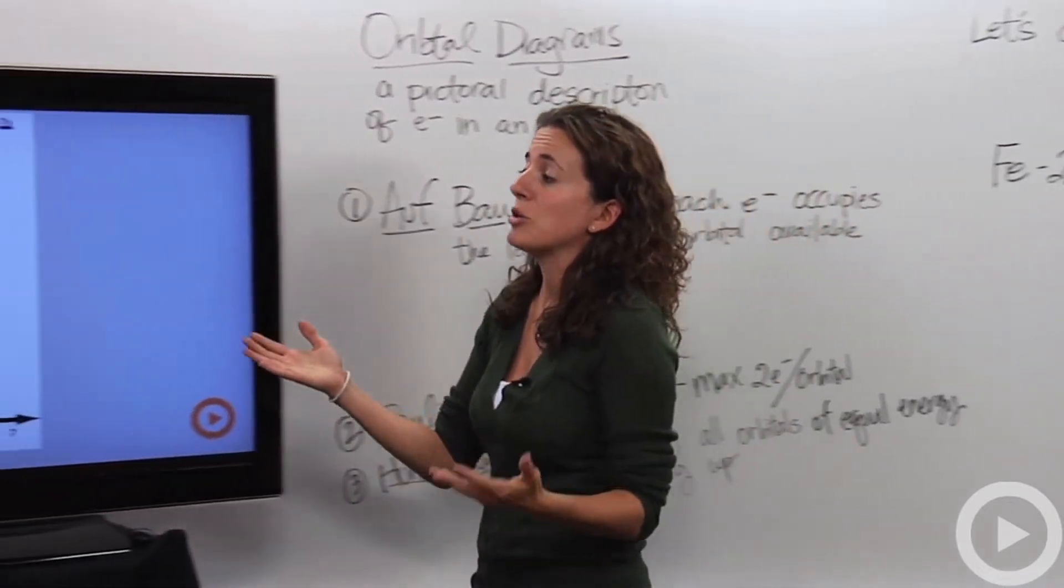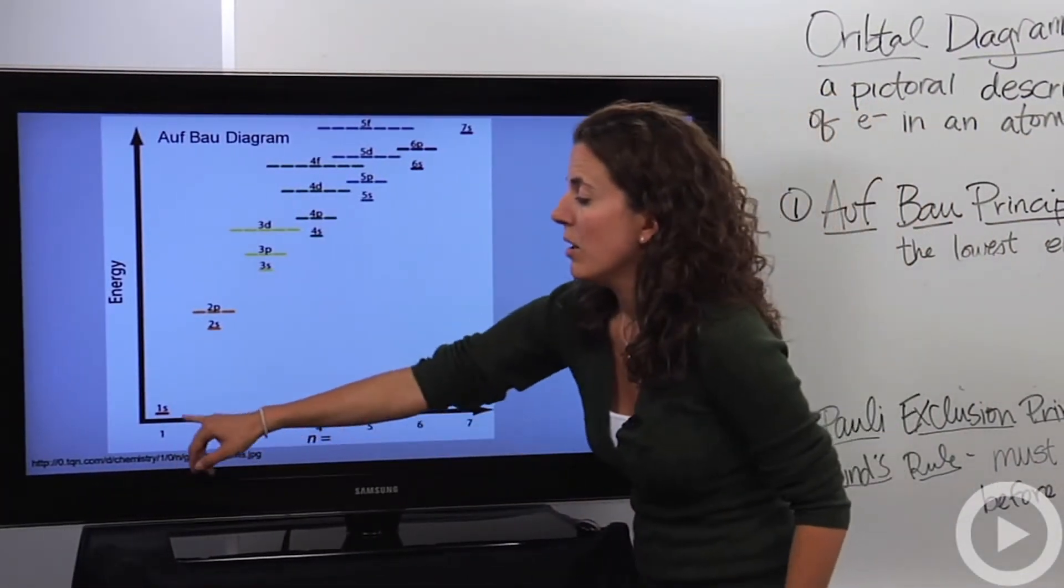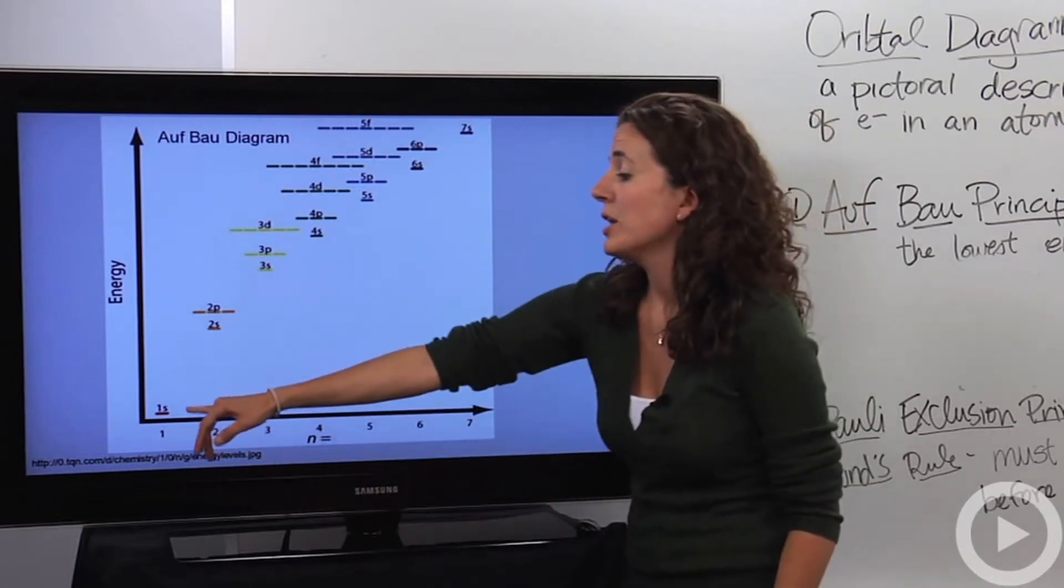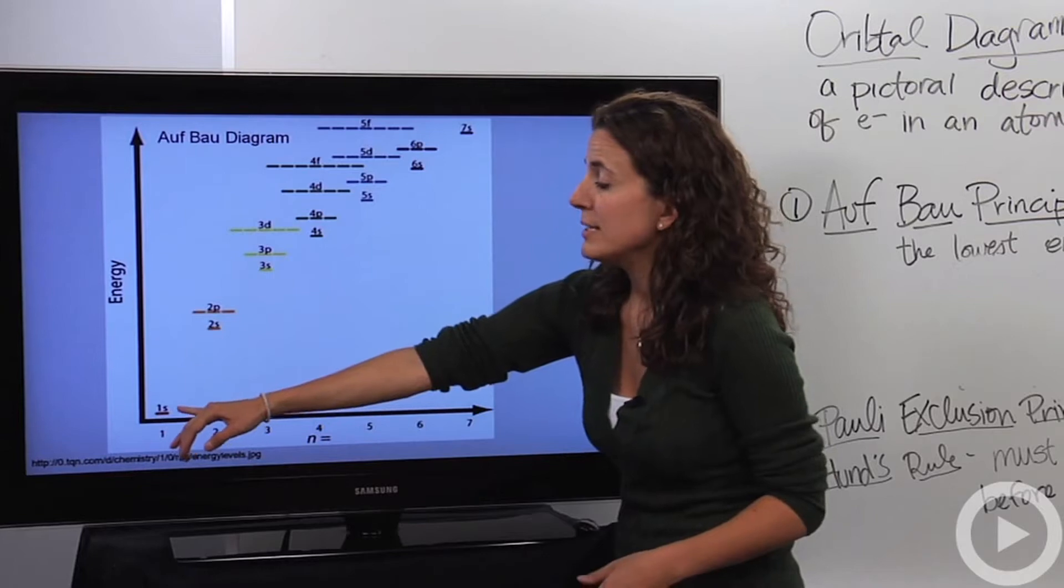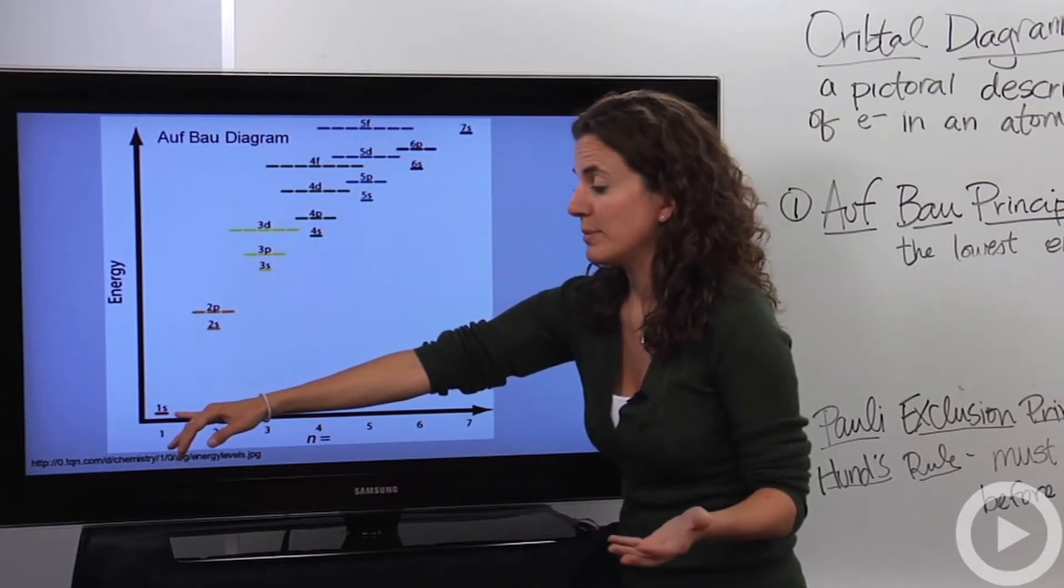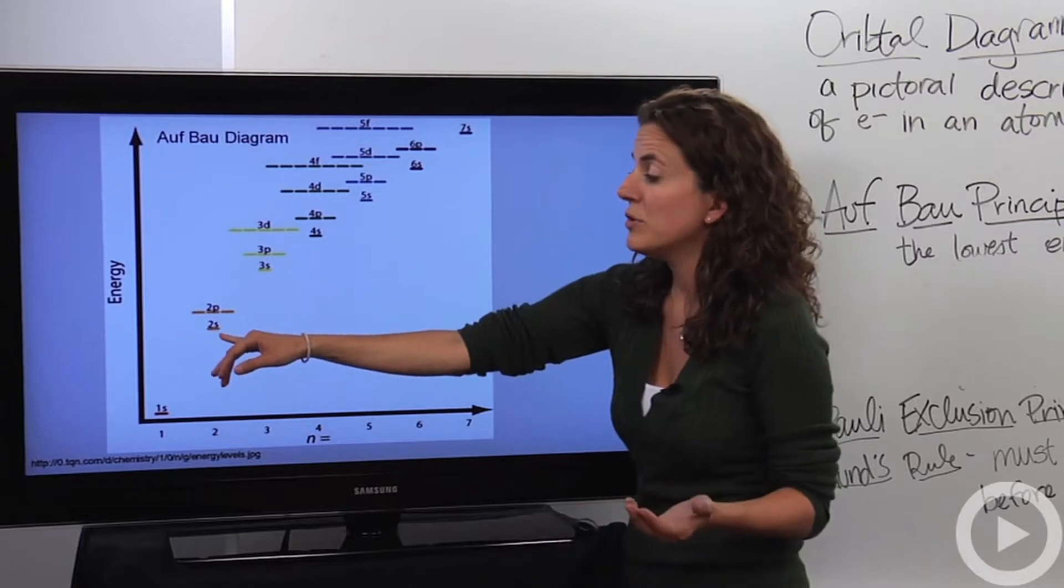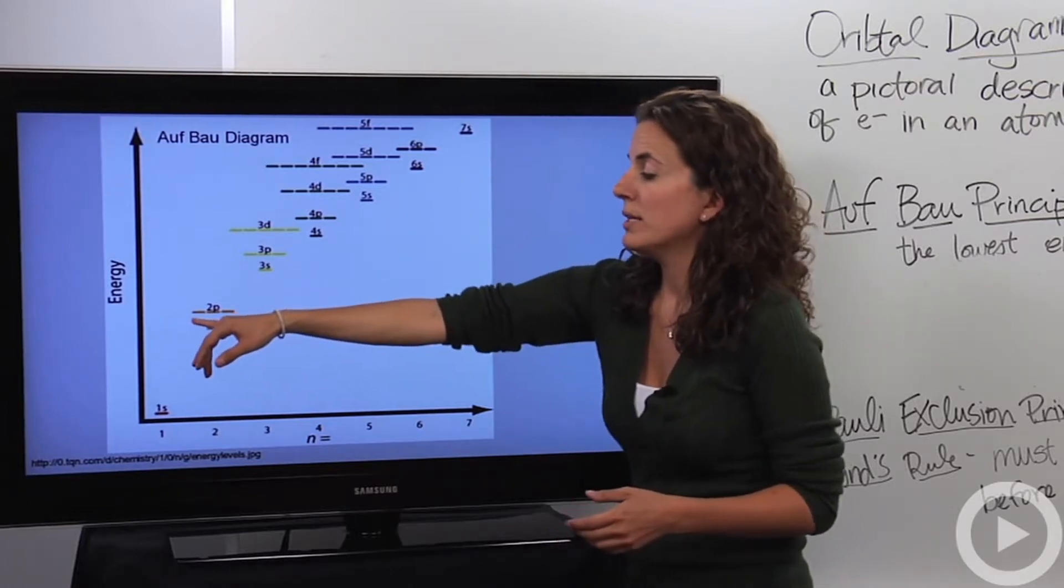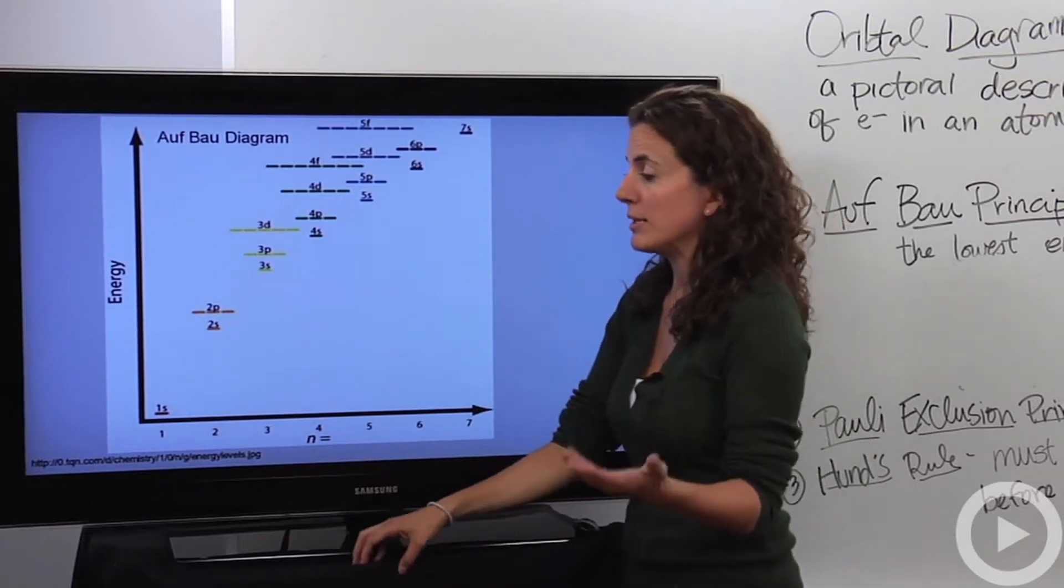So let's look at the Aufbau diagram, which actually shows it for us. Down here we have the 1s orbital. The one dash indicates that there's one orbital within the 1s sub-level, which makes sense that it's the lowest energy. It's the first principle energy level. You jump up a little bit in energy and we get the 2s orbital. Then we get the 2p sub-level. Notice that there's three orbitals within the 2p sub-level.